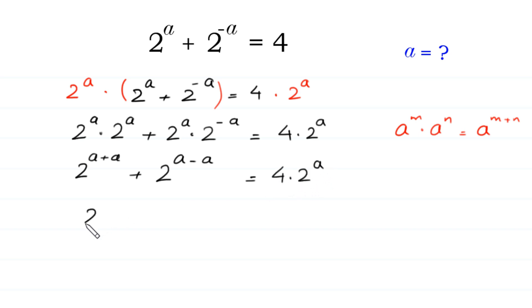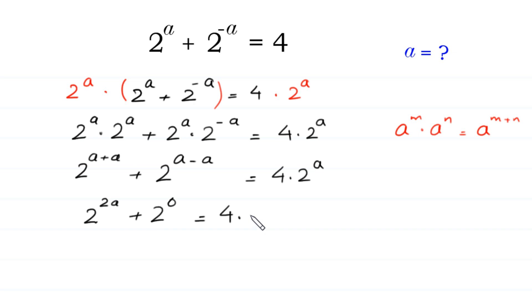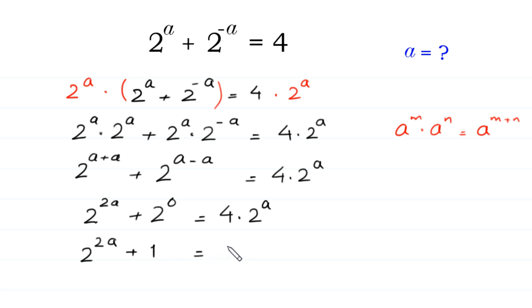This simplifies to: 2 to the power 2a plus 2 to the power 0. Since 2 to the power 0 equals 1, we have 2 to the power 2a plus 1 is equal to 4 times 2 to the power a.